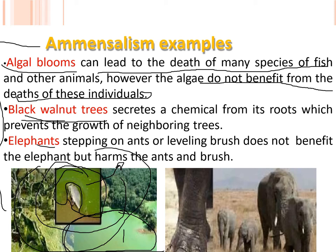Another example: the black walnut tree secretes a chemical from its roots which prevents the growth of neighboring trees. Those neighboring trees are at a loss, while the black walnut tree does not gain any benefit from releasing the chemical.